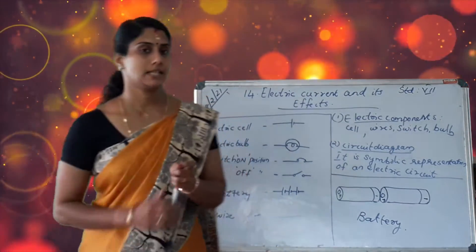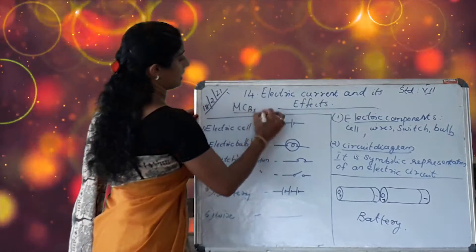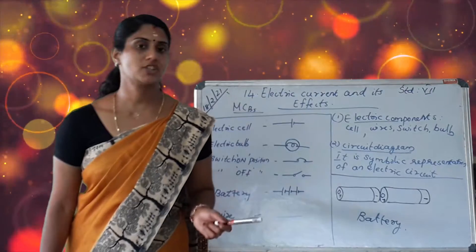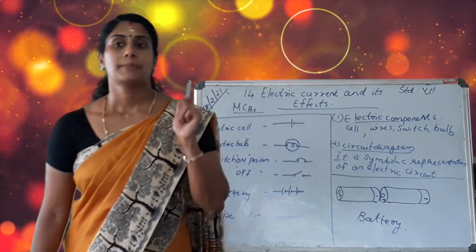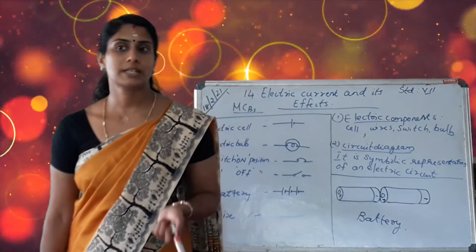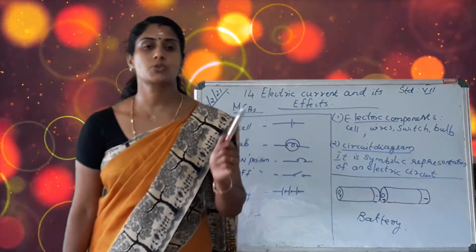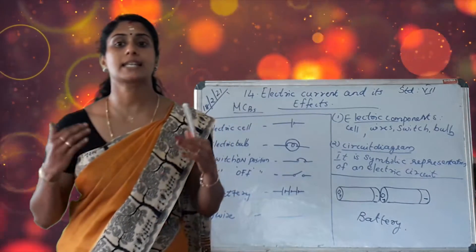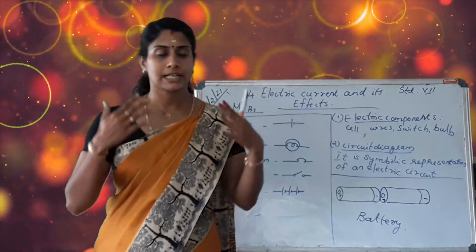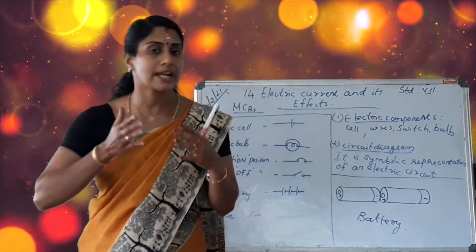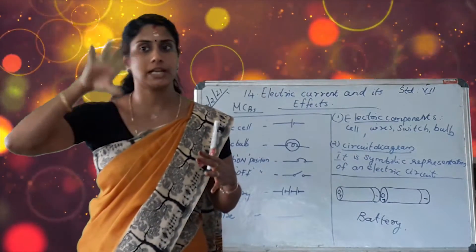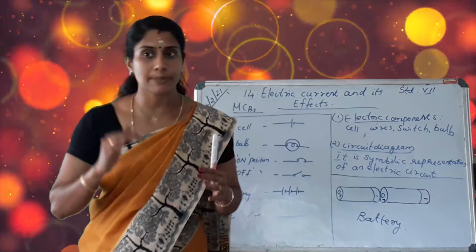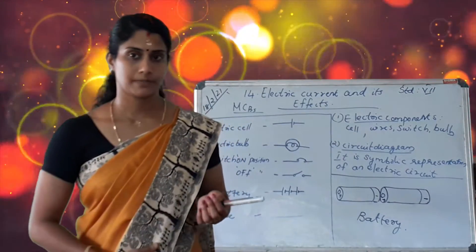Third point: MCBs — Miniature Circuit Breakers. These are switches which automatically turn off, that is, trip, when the current in a circuit exceeds a safe limit.